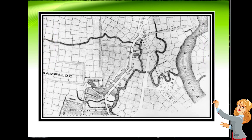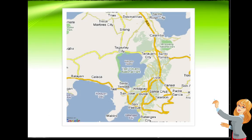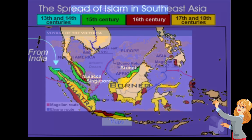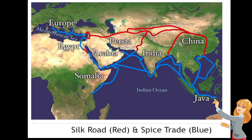Here is a map of Manila — you can see the Pasig River, San Pablo, and the Intramuros. You also have the Voyage of the Victoria map, and the spread of Islam in Southeast Asia, which is also a map. There is some interpretation through coloring that represents something, but the map itself is a primary source.